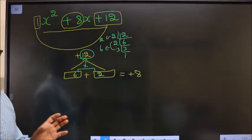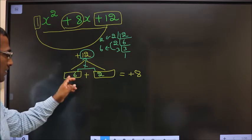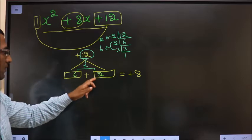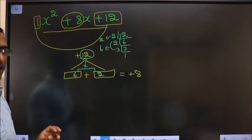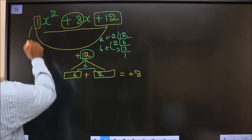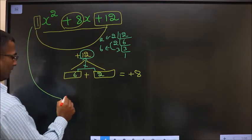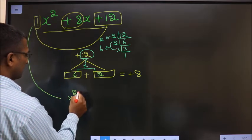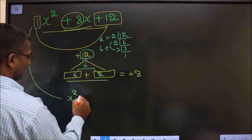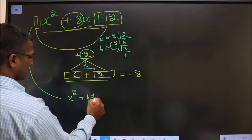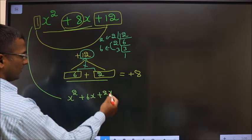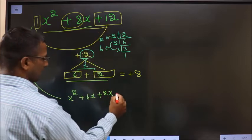Now adjust the signs. 6 plus 2 is plus 8, and 6 into plus 2 is plus 12. So signs are also adjusted. Now this will change: x squared as it is, and in place of 8x, I will write 6x plus 2x. Plus 12 as it is.